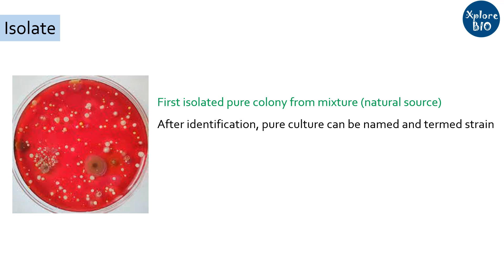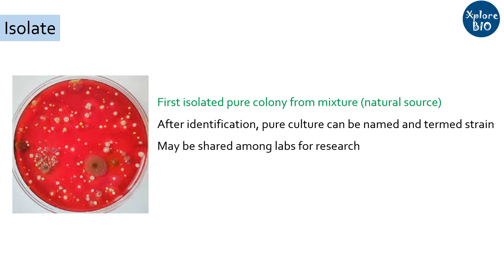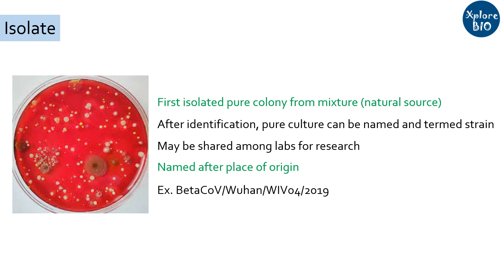But once you have isolated the pure culture and identified it, it can be termed as a strain, which are usually shared among research labs. Isolates are named after their place of origin — for example, the SARS-CoV-2 virus was isolated from Wuhan and hence named so.